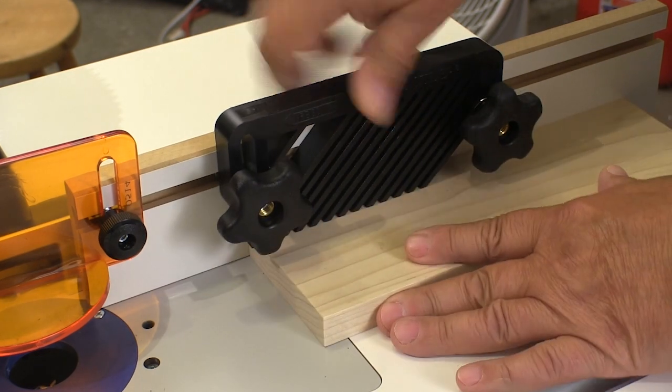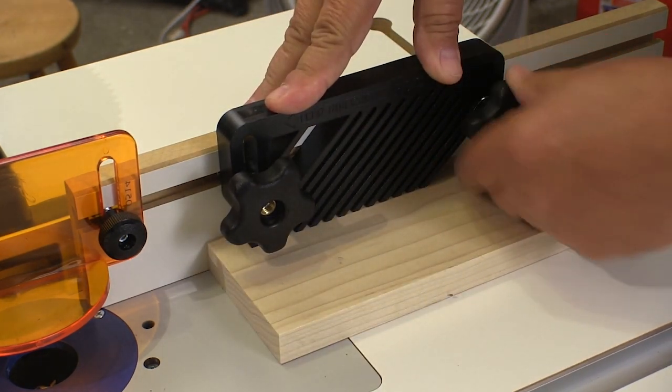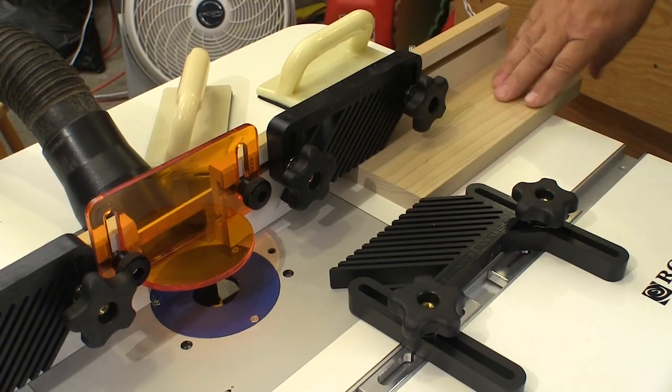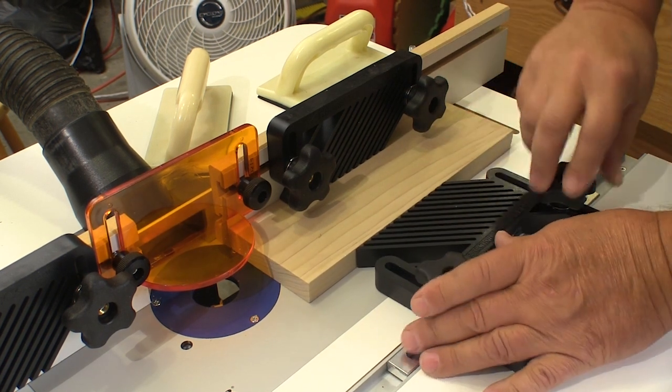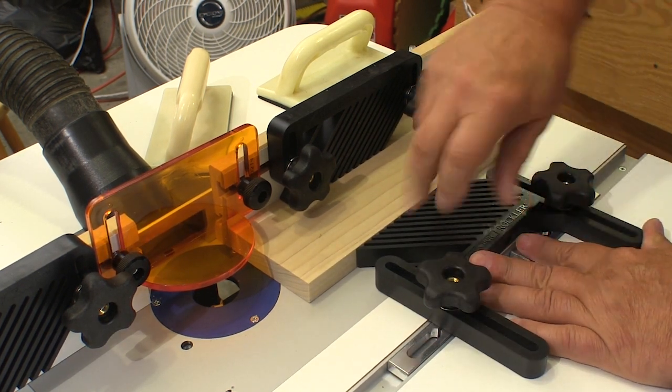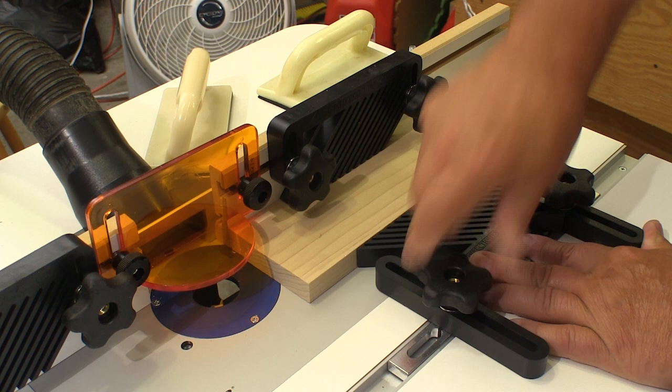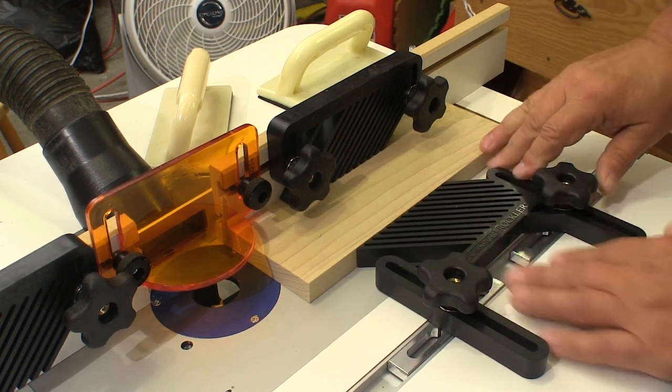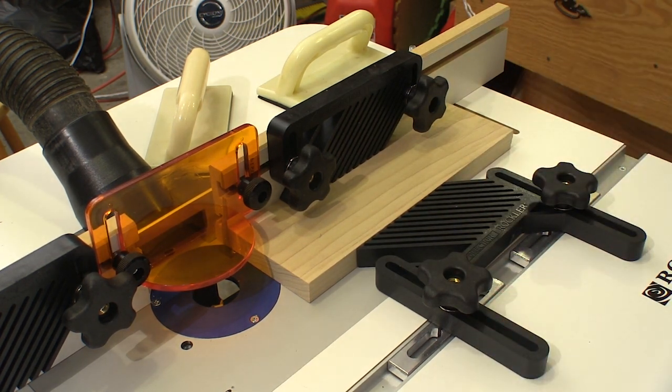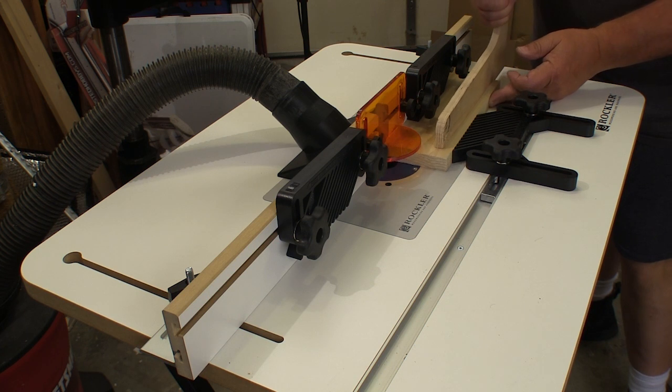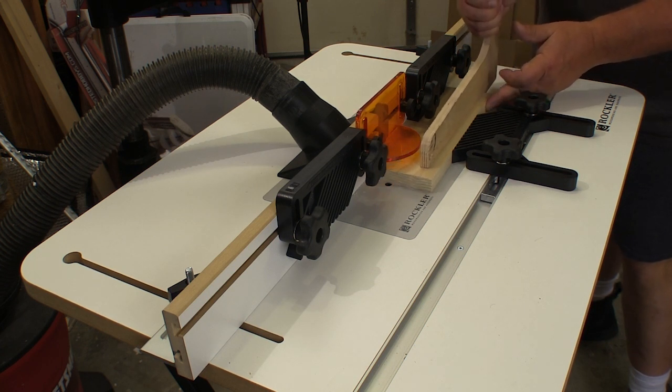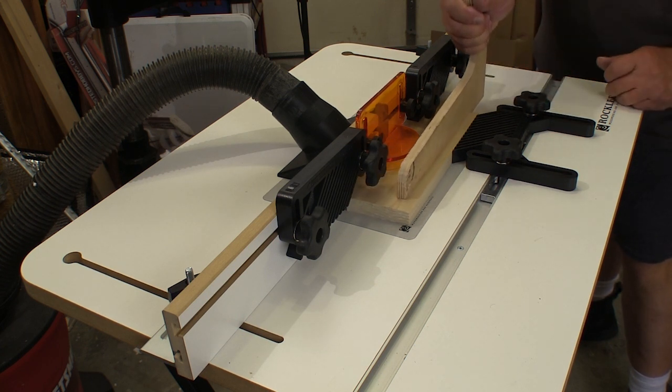The accessory set comes with two fence mounted feather boards and one for the table itself. This gives you lots of options for controlling the wood during the cut. Combined with the accessory kit, the Rockler Complete Basic Router Table Kit gives you all of the capabilities you need in your shop. This lets you be very consistent and more accurate.